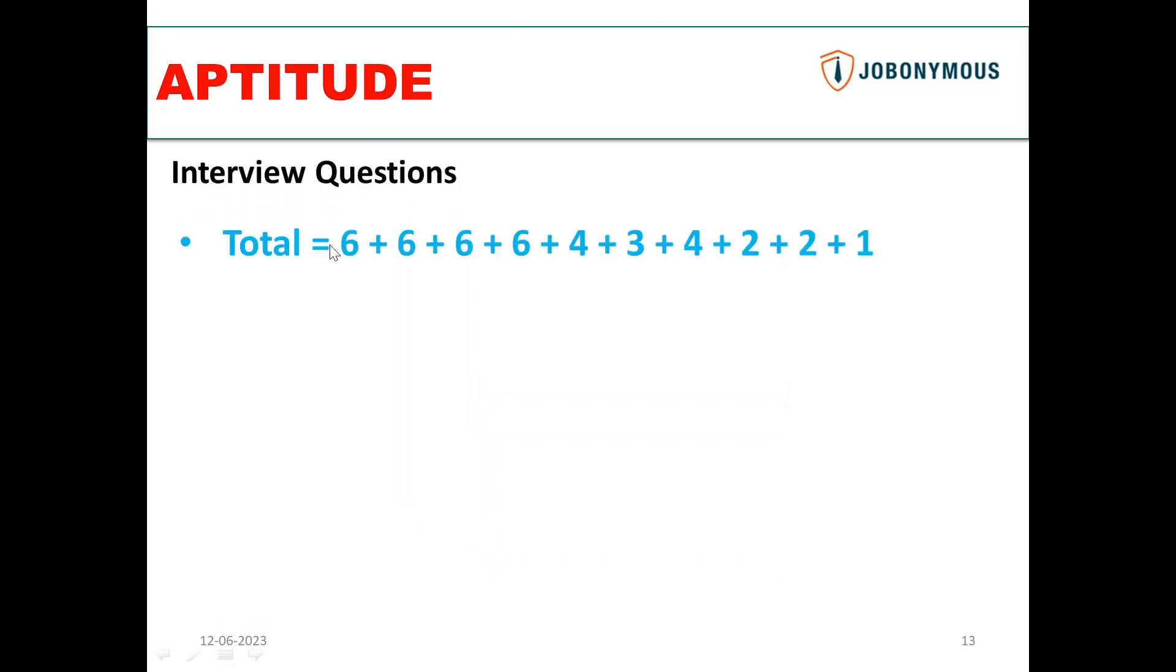We have calculated at each type of level: six, six, six, six, four, three, four, two, two, one. So the total comes out to be 40. So the correct answer is 40 number of squares. Some people have answered 24, 25, 56 - these are not the correct answers. Correct is 40.